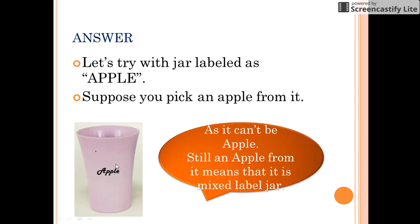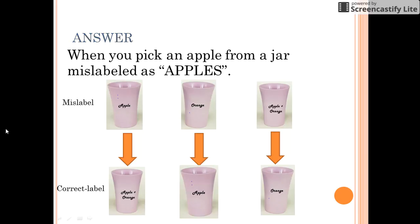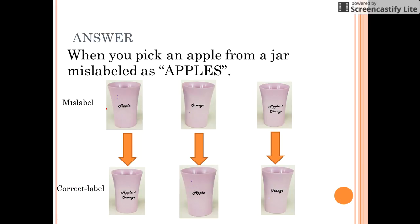If you get an apple from the jar which is mislabeled as apple, it clearly indicates that this jar must be that of apples and oranges. To understand it more clearly, let us see this diagram. When you pick an apple from this mislabeled jar, the only option left was the apples and oranges jar. So we change the label of this apple jar from apple to apples and oranges.